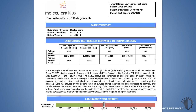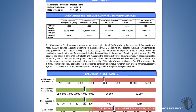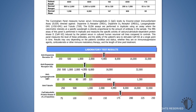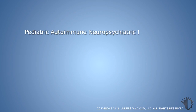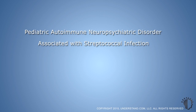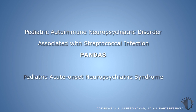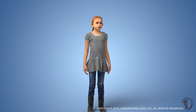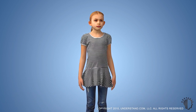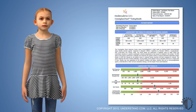The Cunningham Panel is a series of tests developed to help physicians diagnose and treat the infection-triggered autoimmune disorders known as Pediatric Autoimmune Neuropsychiatric Disorder associated with Streptococcal Infection, or PANDAS, and Pediatric Acute Onset Neuropsychiatric Syndrome, or PANS. PANDAS and PANS are clinical diagnoses based upon a patient's symptoms and medical history. When PANDAS or PANS is suspected, a physician can utilize the Cunningham Panel to aid and support their clinical diagnosis with laboratory evidence.